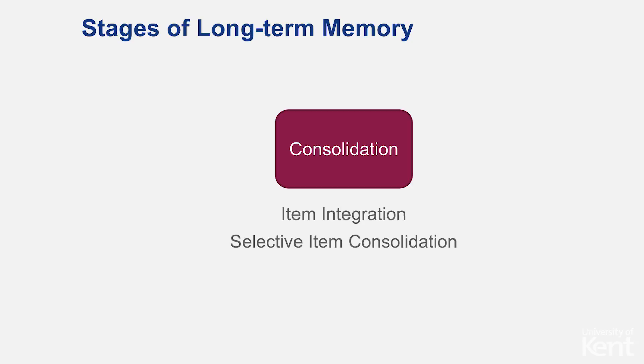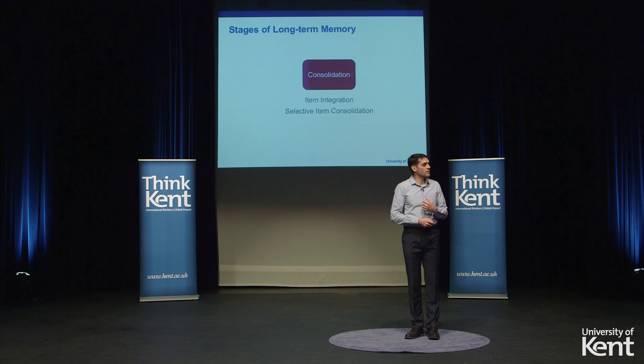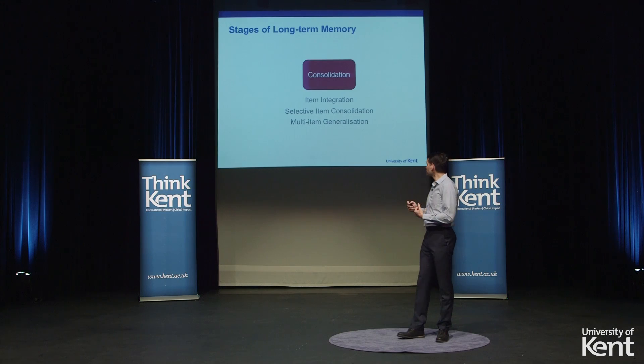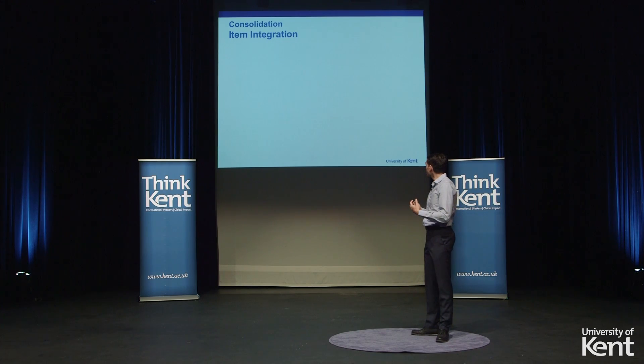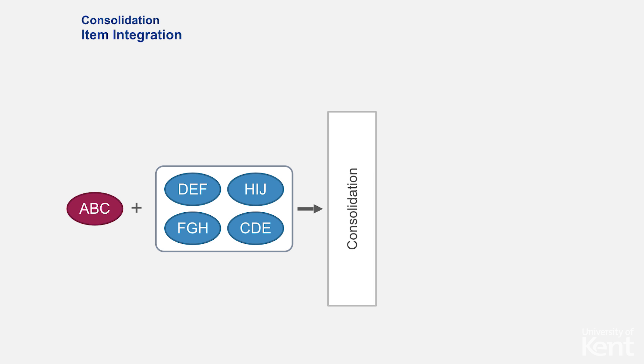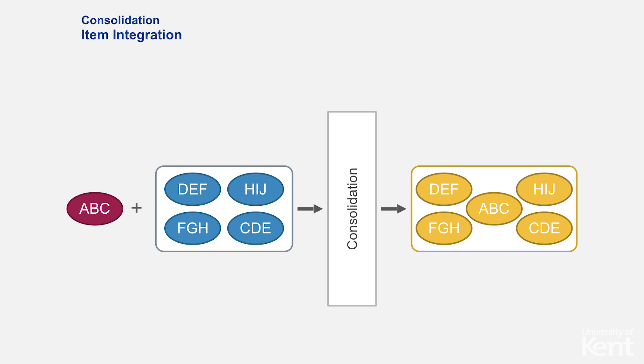The other function is selective item consolidation — among all the information that comes in, you select some and ignore others. And finally, multi-item generalization, where you create an abstract idea of the information. For item integration, imagine you have four pieces of information already stored in your mind and a new piece comes in — A, B, C. When these go through consolidation, you integrate them all together and have five pieces of information stored in your mind.